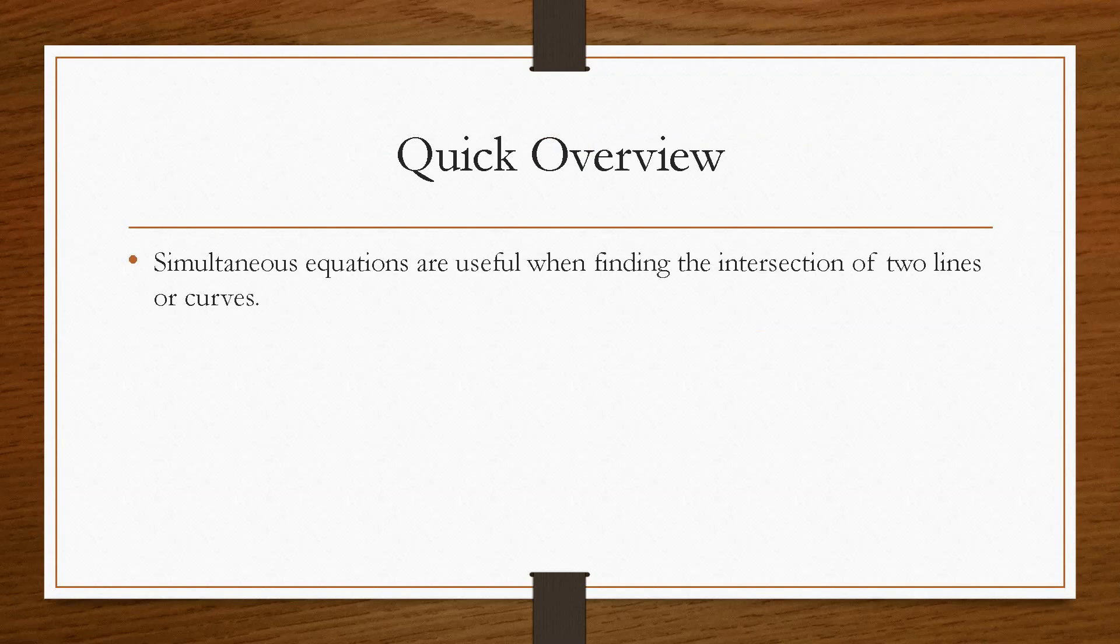So we'll take a quick overview. Simultaneous equations are useful when finding the intersection of two lines or a line and a curve. And there are two ways that you can solve these: you can either do it by substitution or elimination.